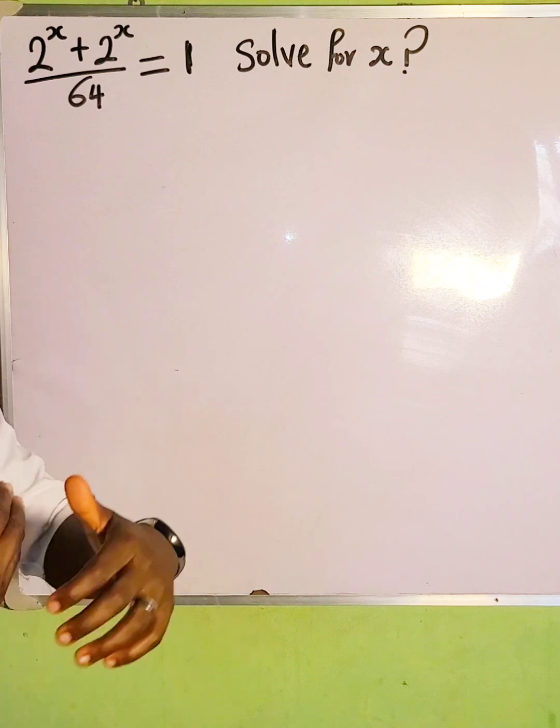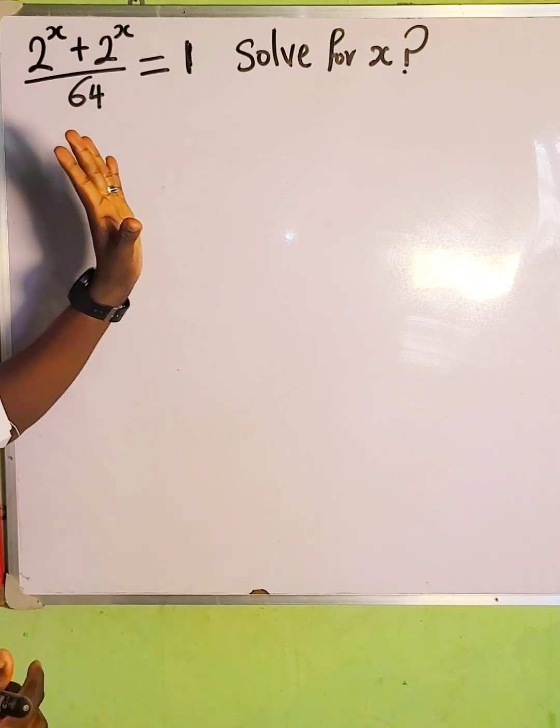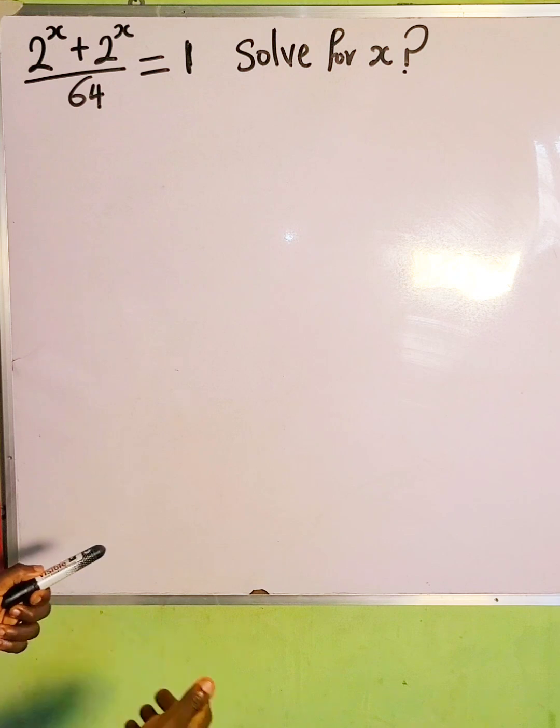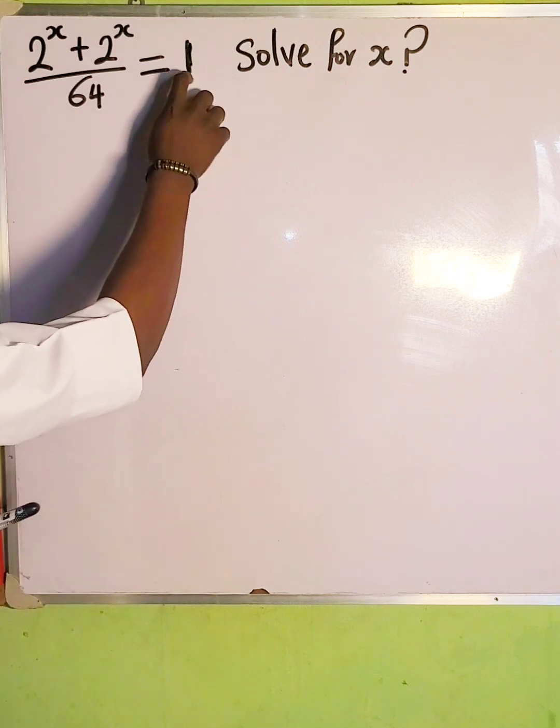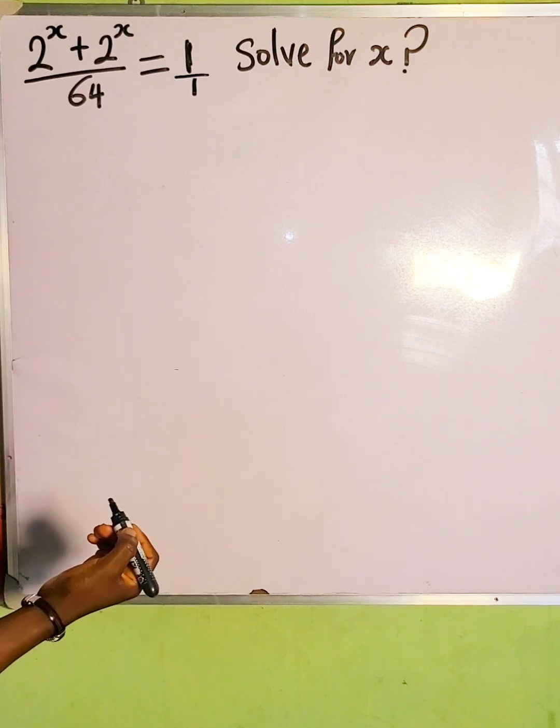The first thing we need to do is to clear the fraction. We can multiply both sides by this denominator or we can cross multiply. Now let's use cross multiplication method. We want to make 1 into a fraction, so 1 divided by 1 is also 1 for easy cross multiplication.